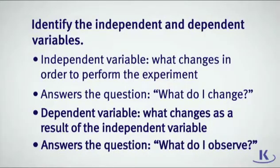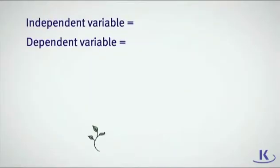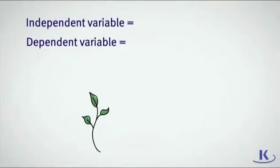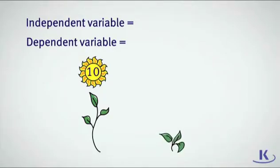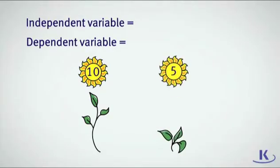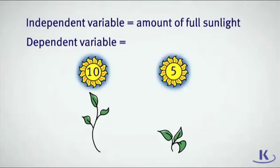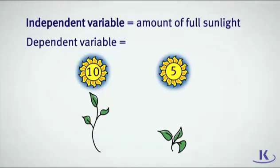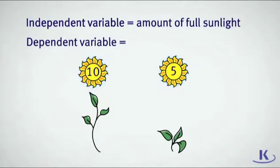For example, if you measure the height of a bean sprout under full sunlight for 10 hours a day versus the height of a bean sprout under 5 hours of full sunlight per day, the amount of full sunlight is the independent variable — the variable that is controlled. The growth rate of the bean sprouts would be the dependent variable.